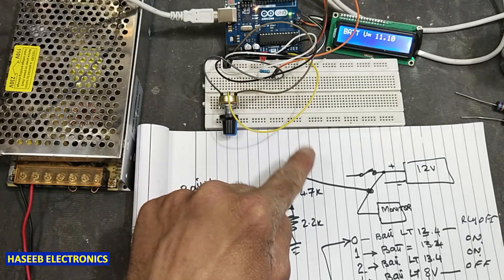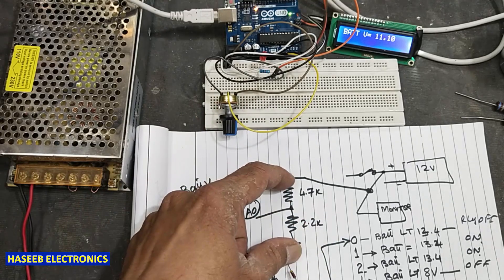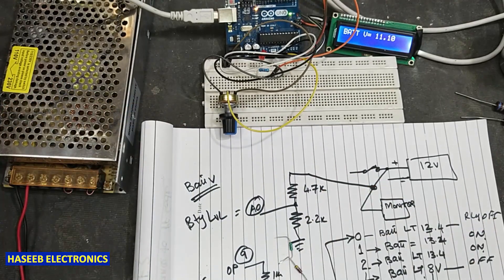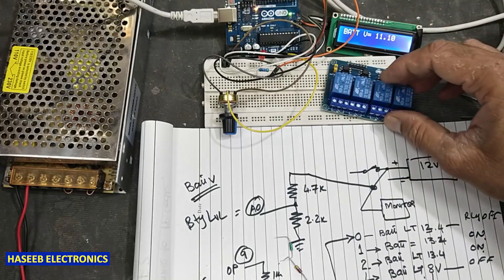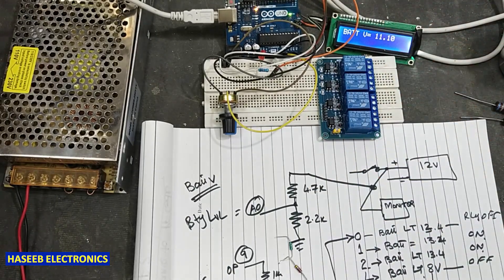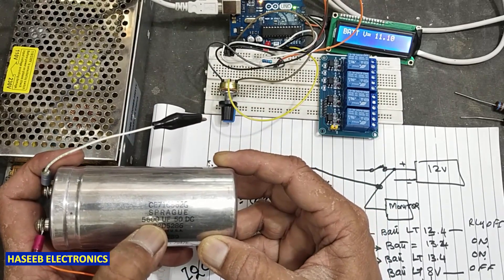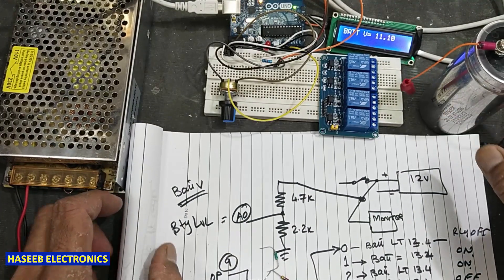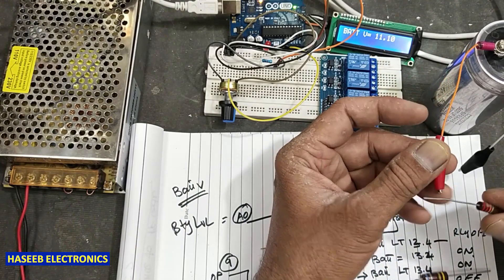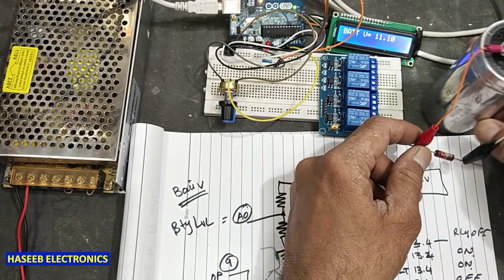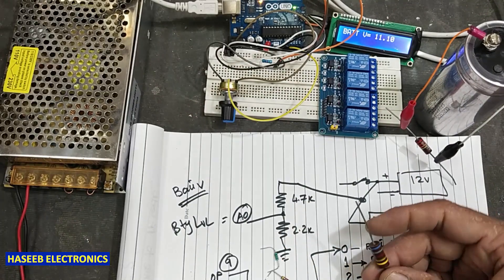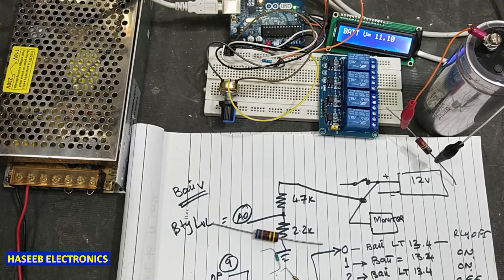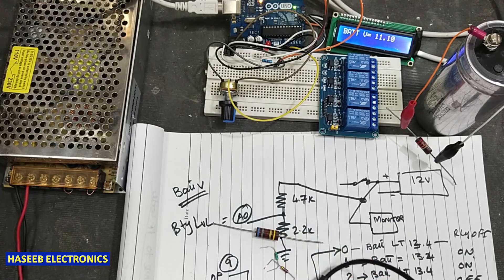We will use a practical battery voltage and we will use this power supply as a battery charger. We will use a relay module to control the battery charging, and we will use this capacitor — it is 5600 microfarad, 50 volt. We will charge and discharge this capacitor. For that purpose I will use a 22 kilohm resistor as a load, and I will control the charging current by adding a 6.8k resistor.